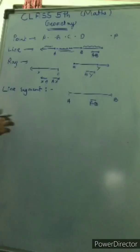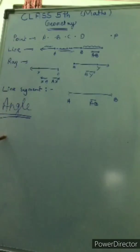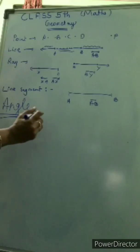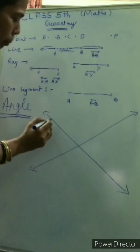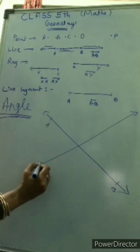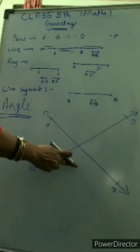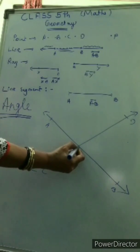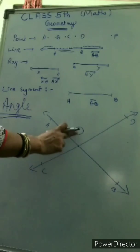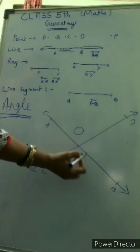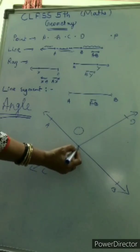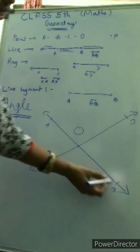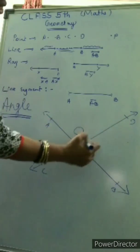So today we will introduce one more shape, that is angle. So children, for angle, just all of you focus now. I have taken two intersecting lines — this is your AB and this is your CD. Both are intersecting lines, so they have one intersecting point. This point is known as the intersecting point, meaning it lies on AB as well as CD. Now children, OB is a ray and OD is also another ray.